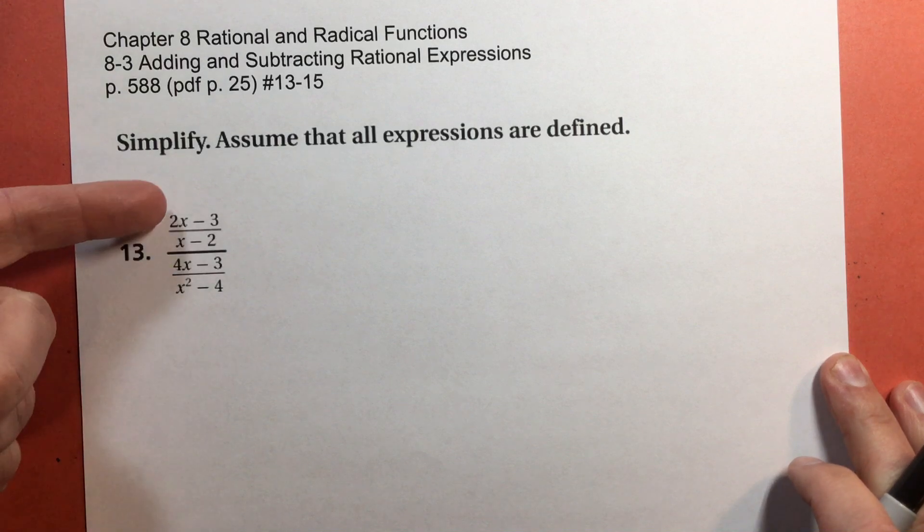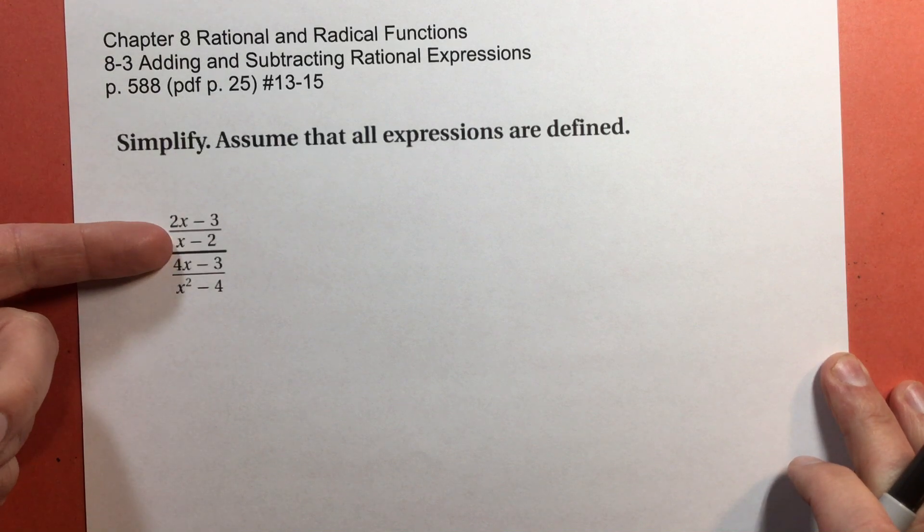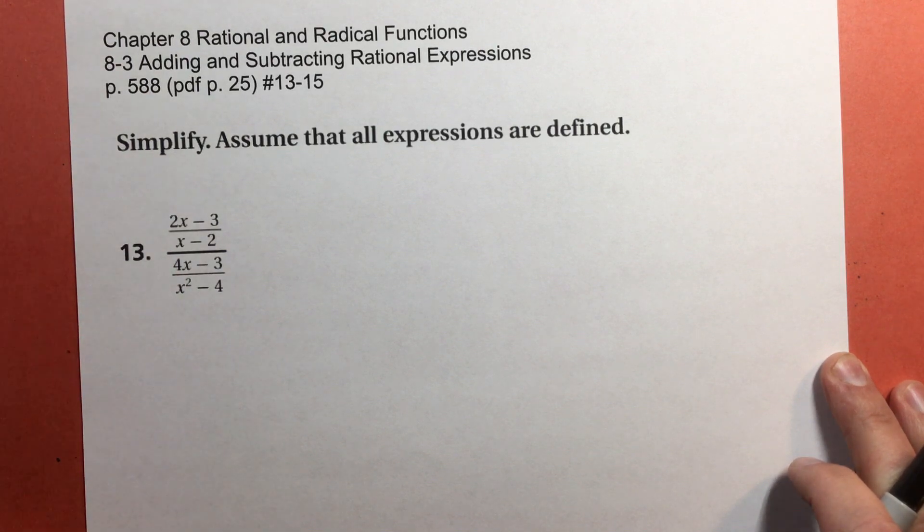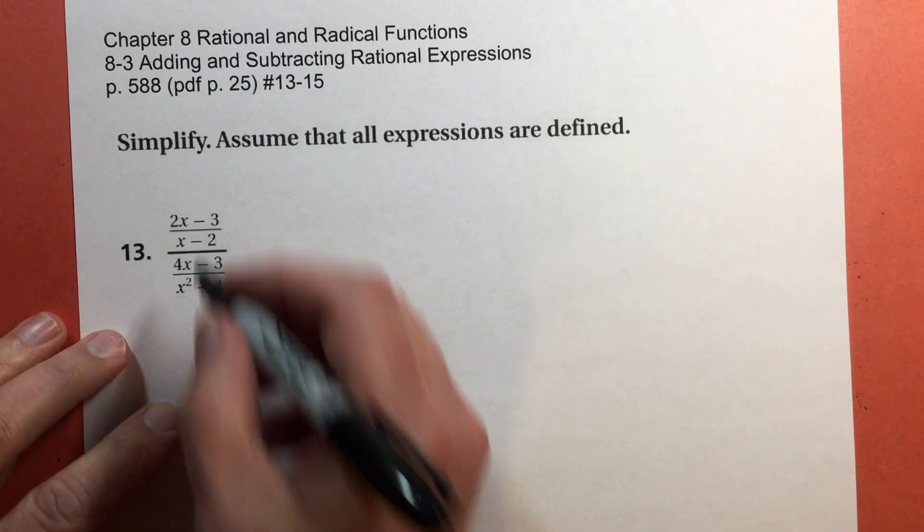This basically means 2x subtract 3 over x minus 2 divided by 4x subtract 3 over x squared minus 4. You can do this as a division problem, multiply by the reciprocal, factor, reduce, and re-multiply like we did last time. But we're using this example as a way to show you another use for least common multiple.